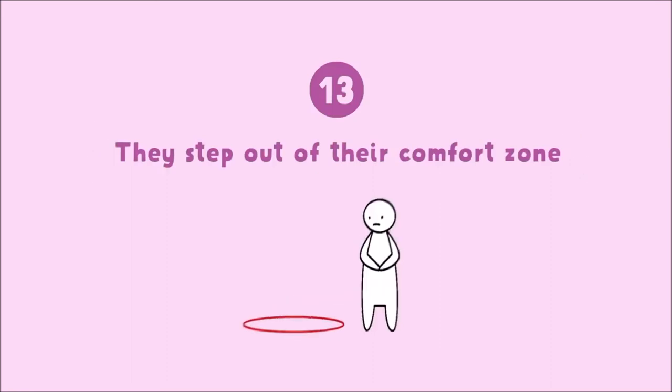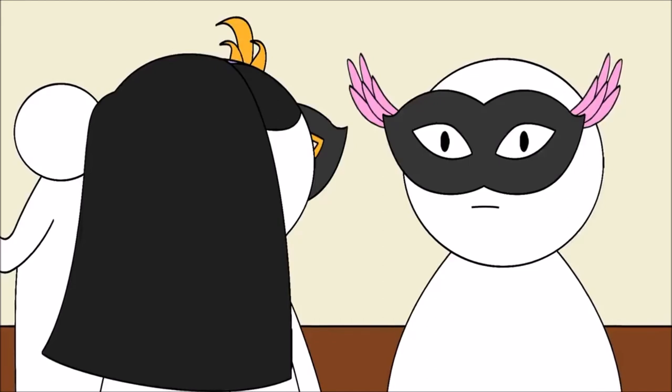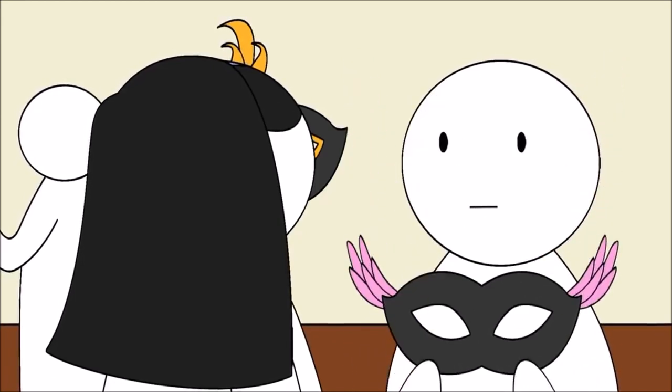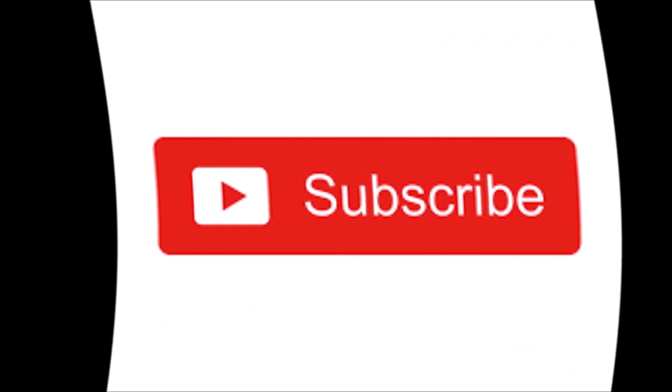13. They step out of their comfort zone. Introverts are wired differently than extroverts and prefer to watch on the sidelines before jumping in. But when an introvert likes you, they're willing to make a move and try something new.